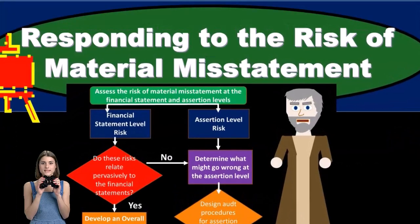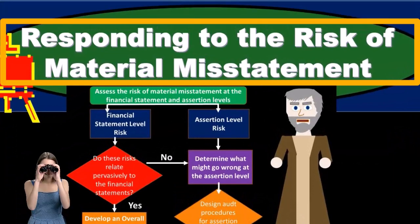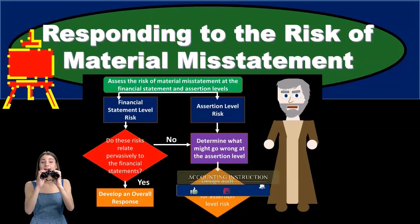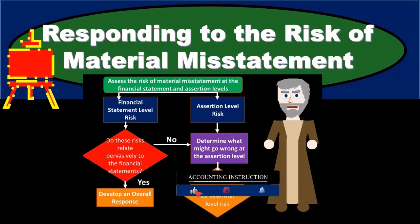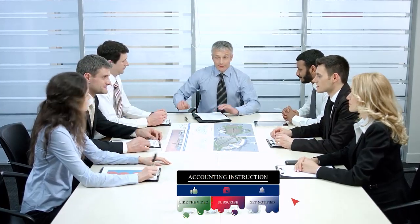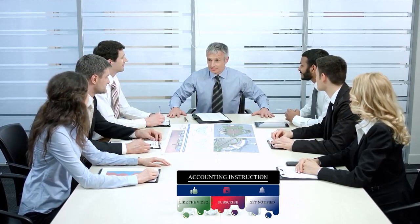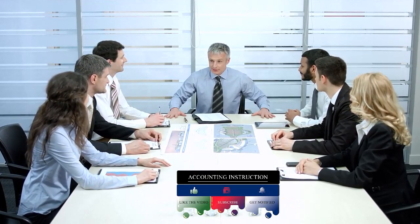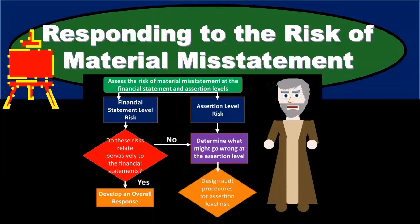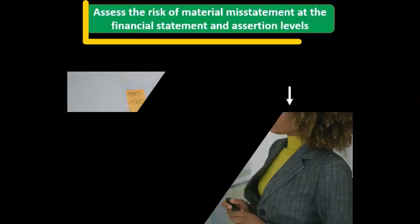Real misstatement. Remember, our goal here as the auditor is to take a look at those financial statements and give an opinion on the financial statements to see whether they are in accordance with some type of standard, typically generally accepted accounting standards. Therefore, we are looking for those items that are going to be material misstatements — material deviations from generally accepted accounting standards. We want to think about the thought process of responding to the risk of those material misstatements.